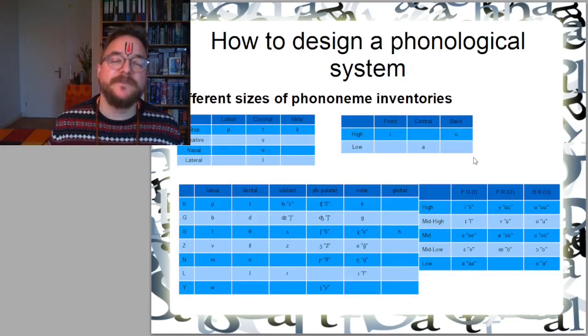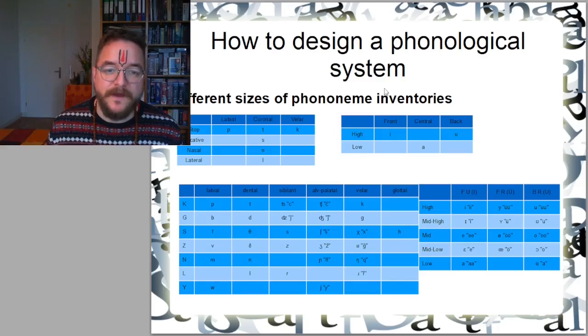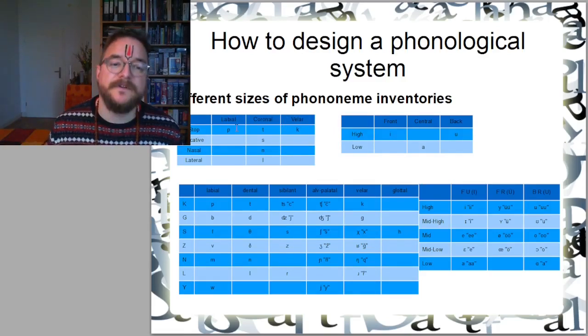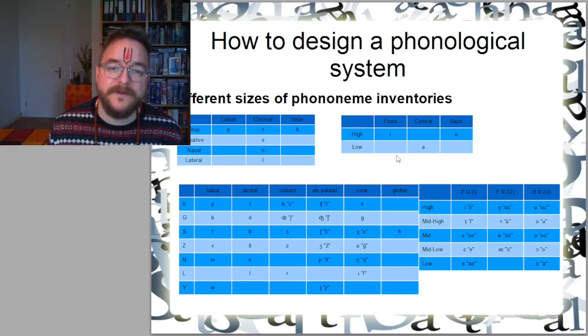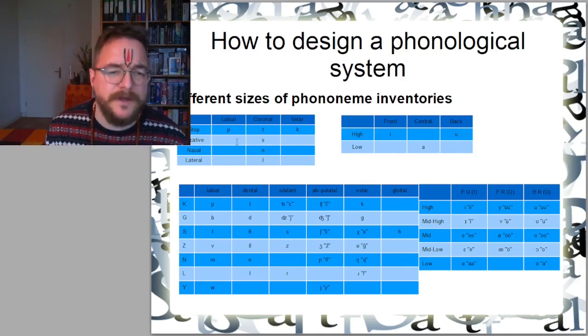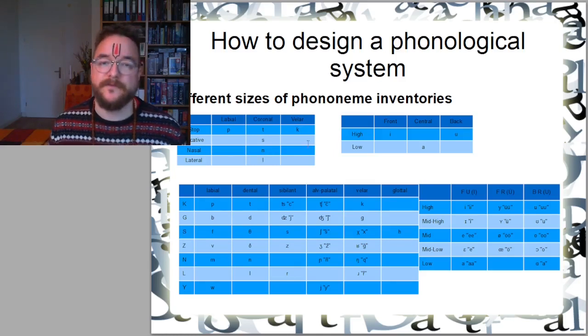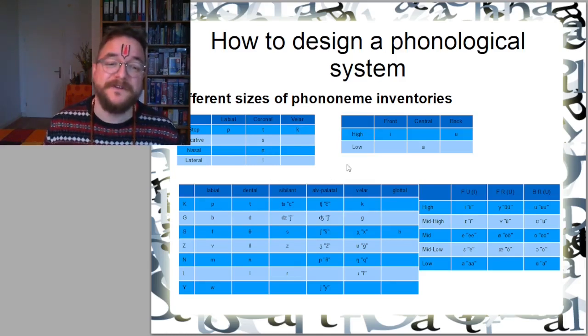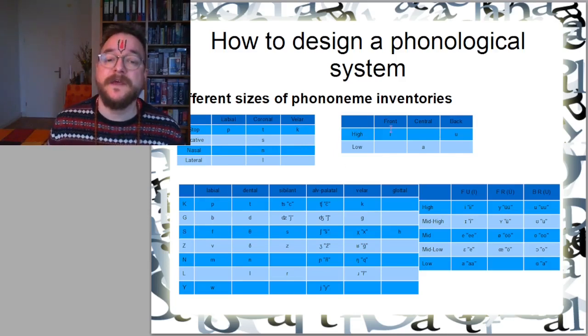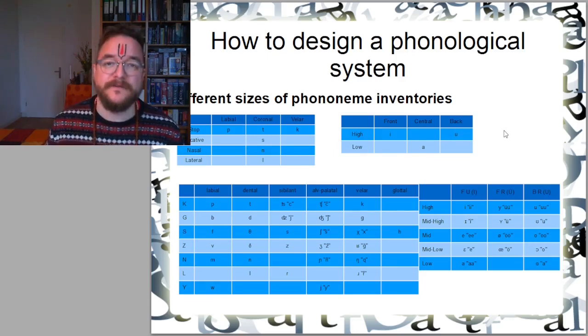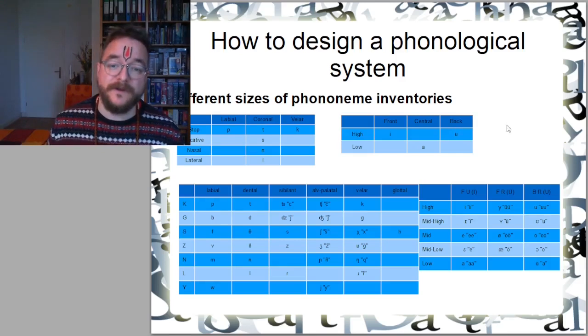Phoneme inventories come in different sizes. Here on the top you see a small consonant inventory and a small vowel inventory. I'm just going to read them to you shortly. P, T, K, S, N, L. That's really like a very small consonant inventory. And the vowel inventory here is I, A, U. Three vowels. There are languages that actually have such small inventories.